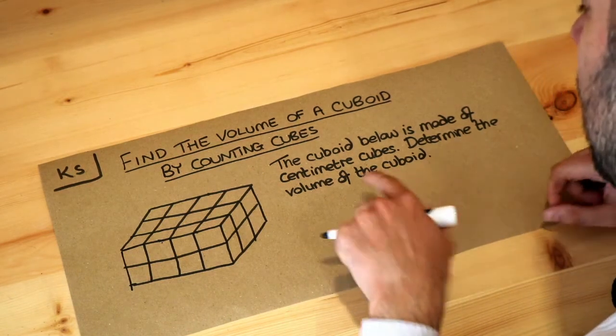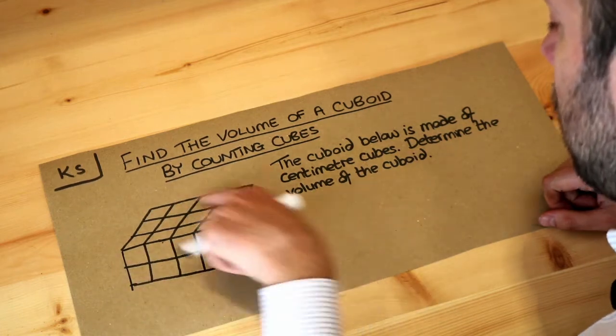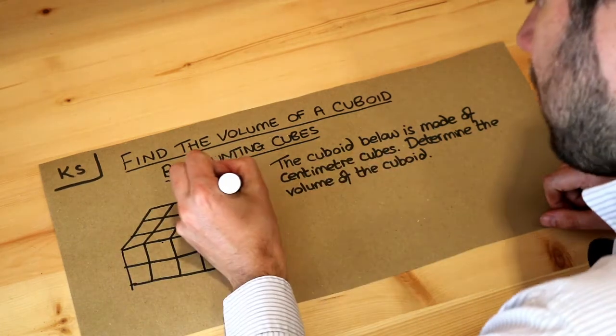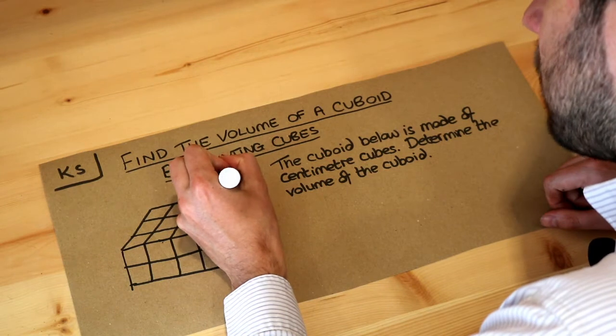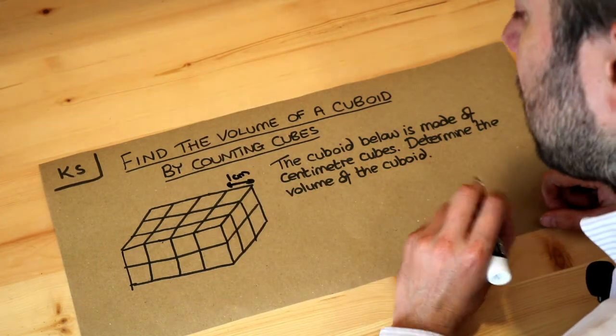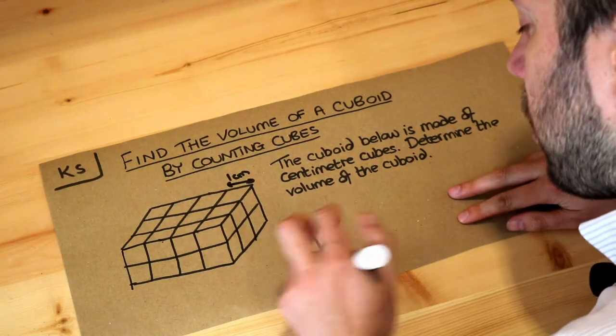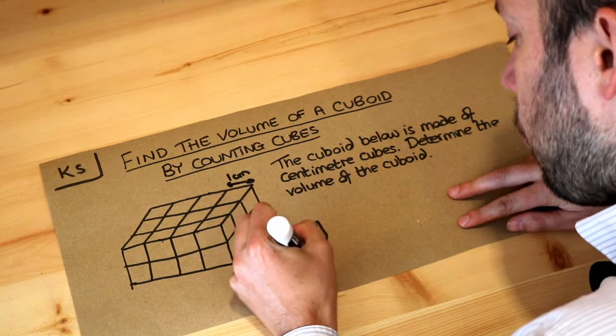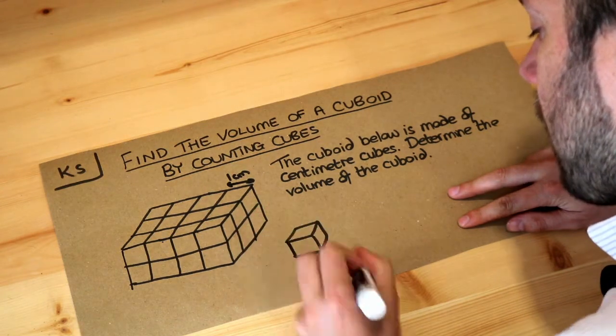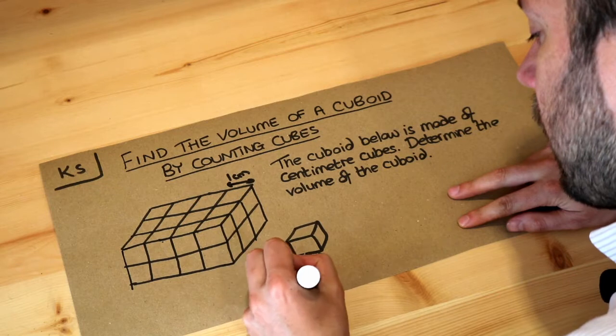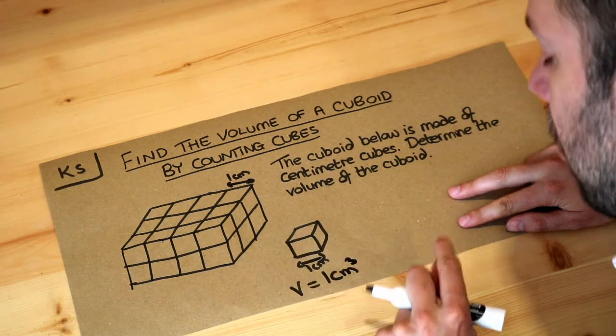Each of these little mini cubes that makes up the cuboid are centimeter cubes, so each cube is one centimeter by one centimeter by one centimeter. That means a single cube's volume would be one centimeter cubed.